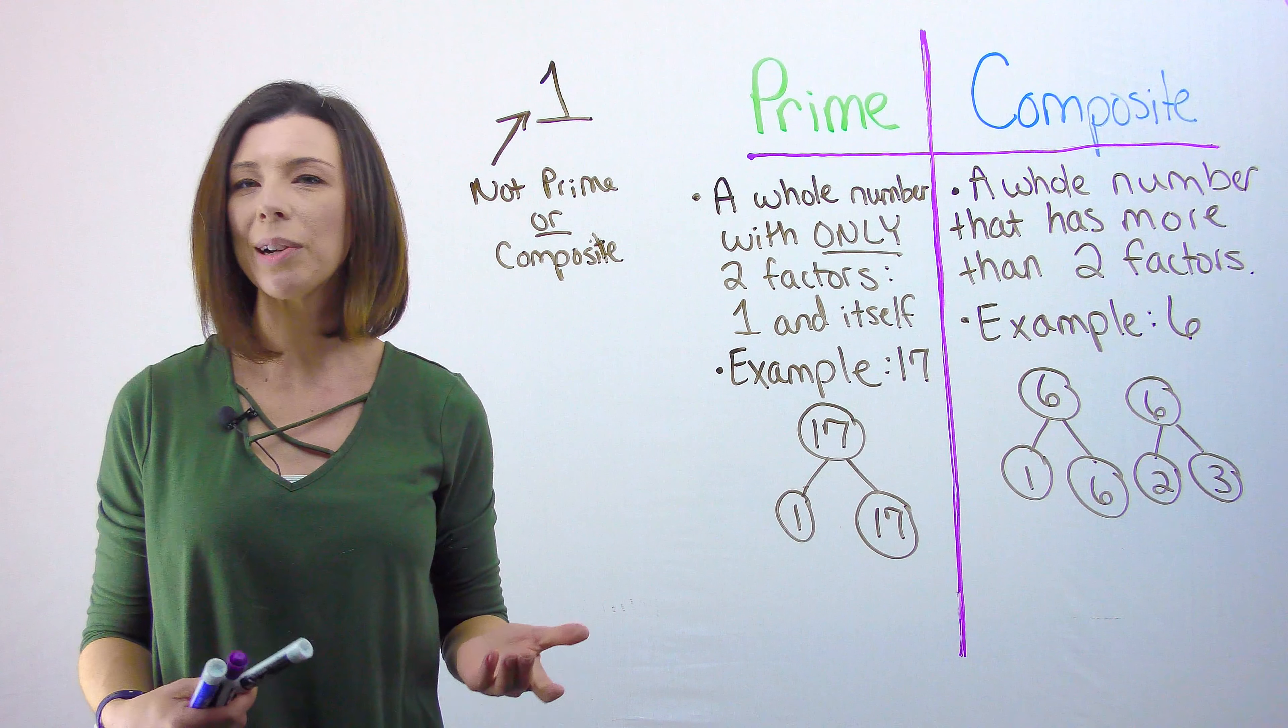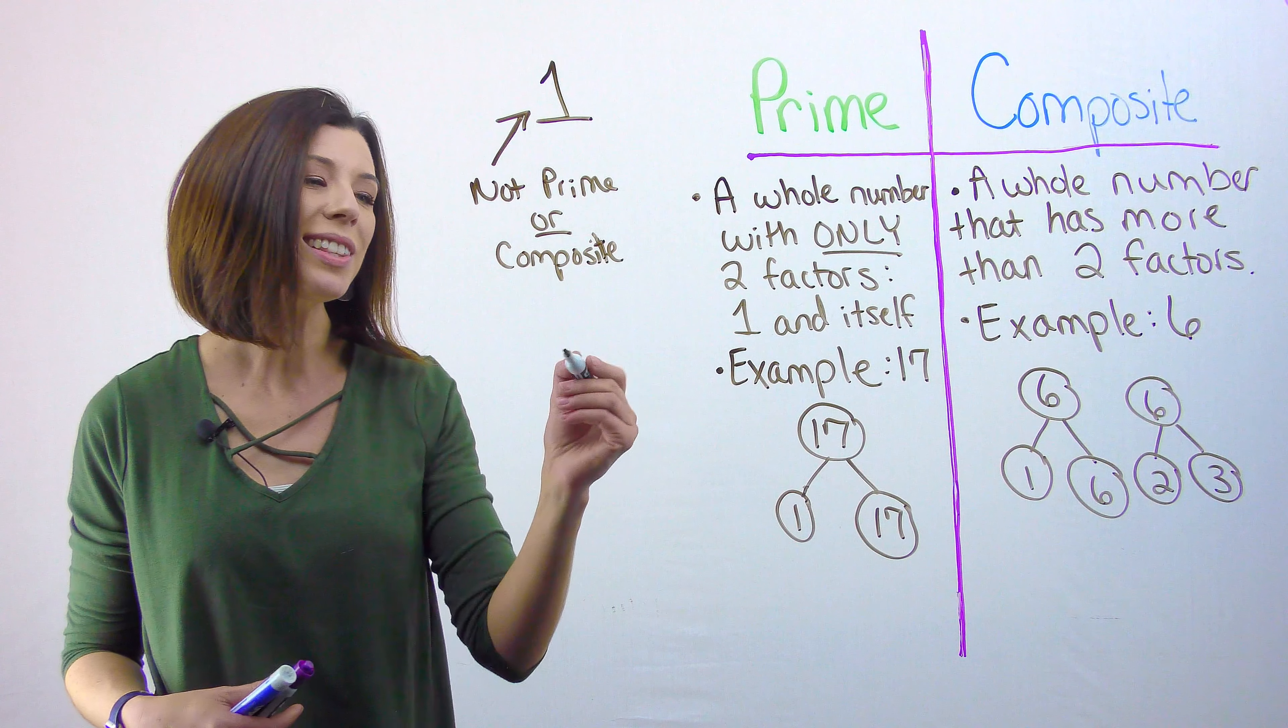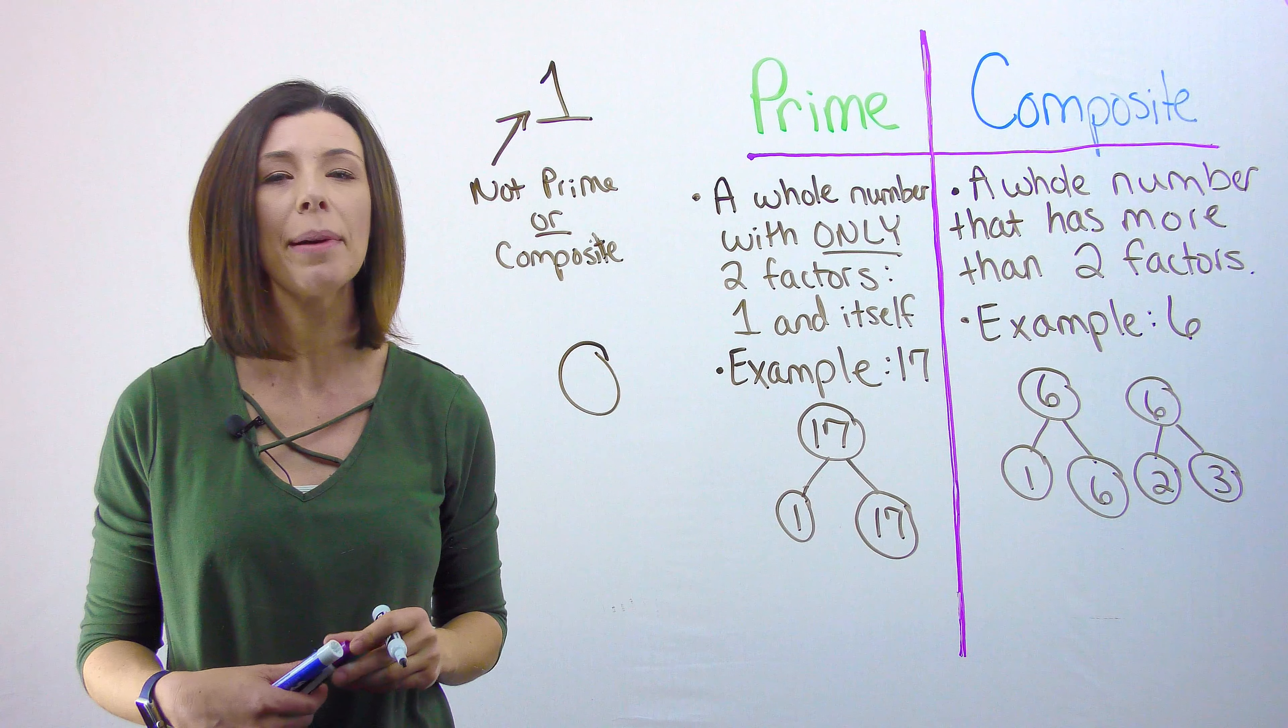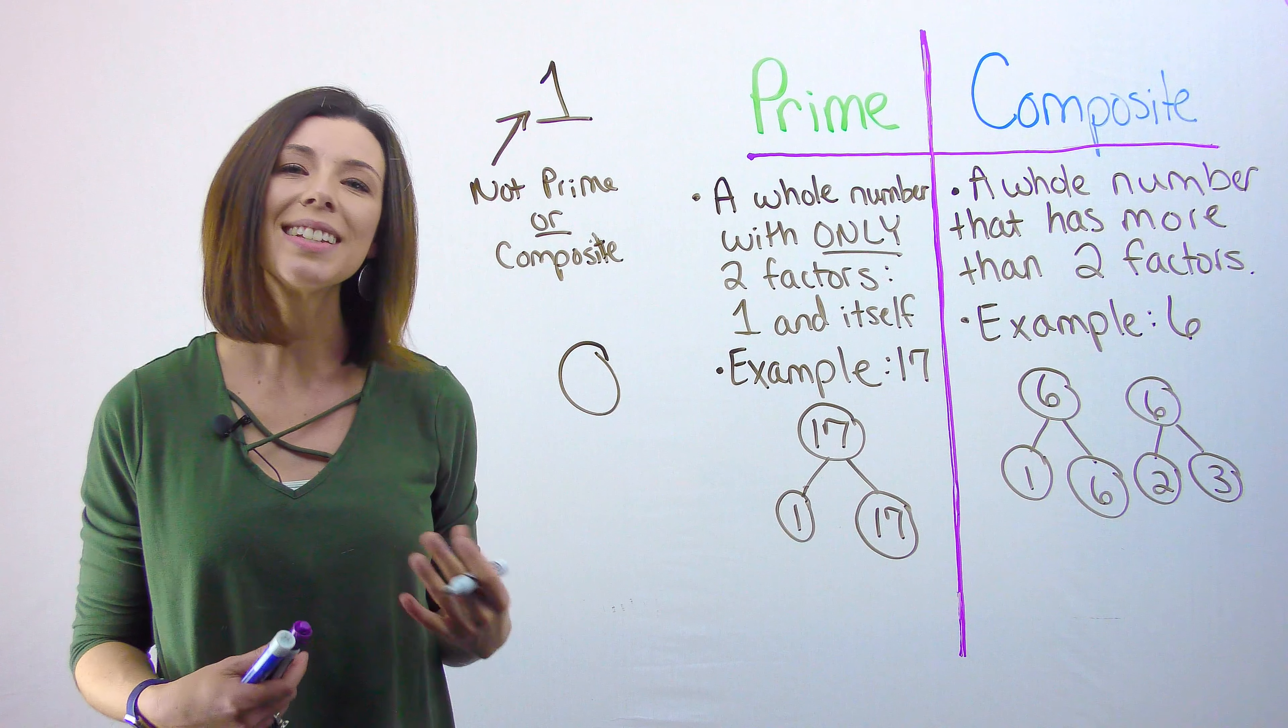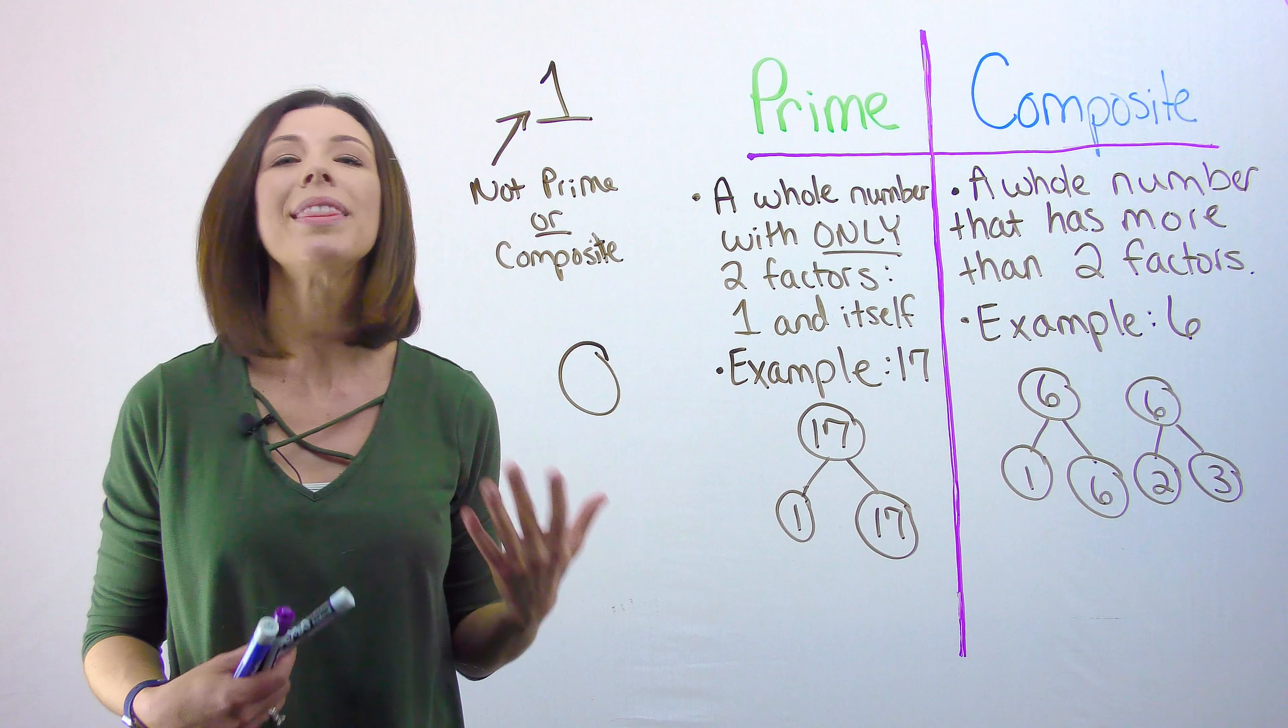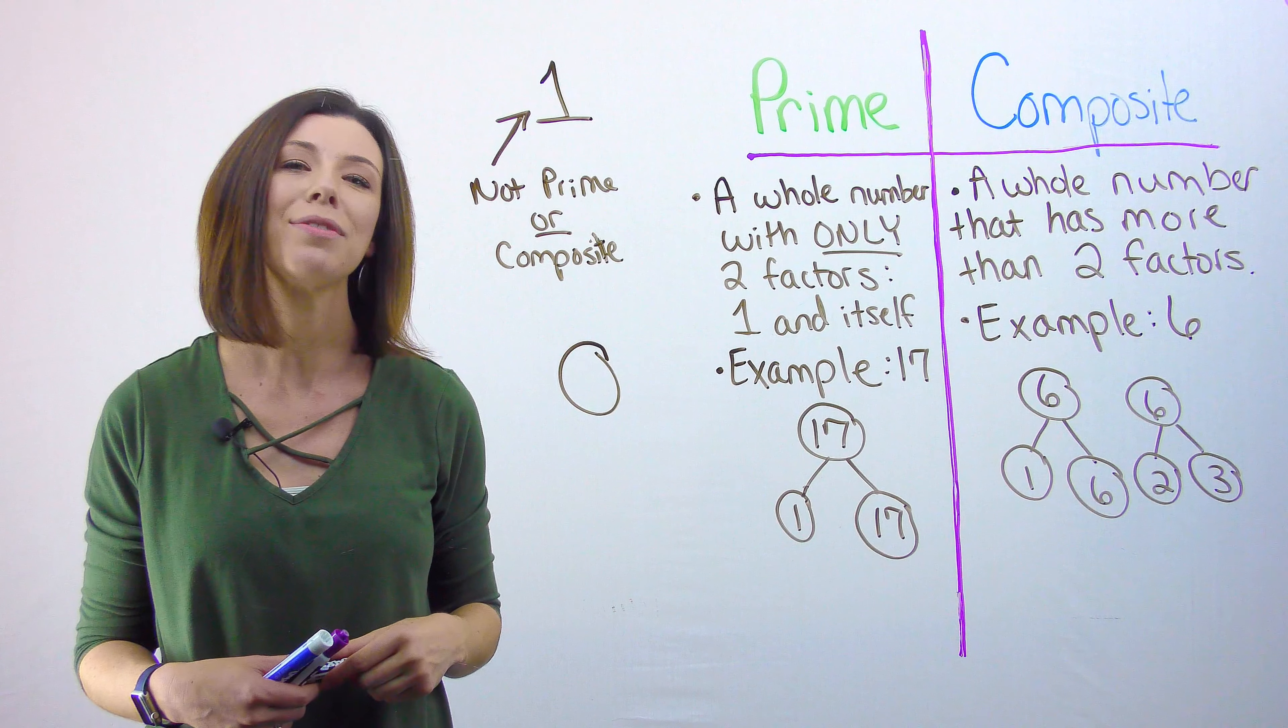Now let's talk about zero. Zero actually falls into the same bucket as one. So zero is also not prime or composite, because again, it doesn't have more than two factors. Yeah, you can multiply zero times zero to get zero, but that is not two distinct factors.